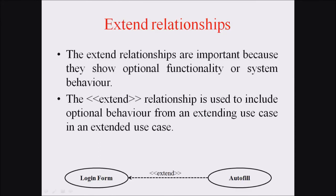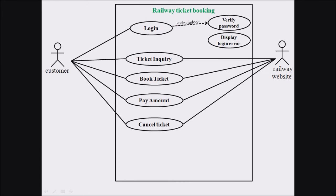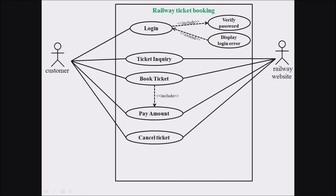The extend relationship shows optional functionality or system behavior and is the reverse of an include relationship. For example, display login error is an extended case of login — when a customer enters a wrong password, the error is displayed on screen. This is an extended use case, not an included one. Additionally, the book ticket use case must include the pay amount use case.